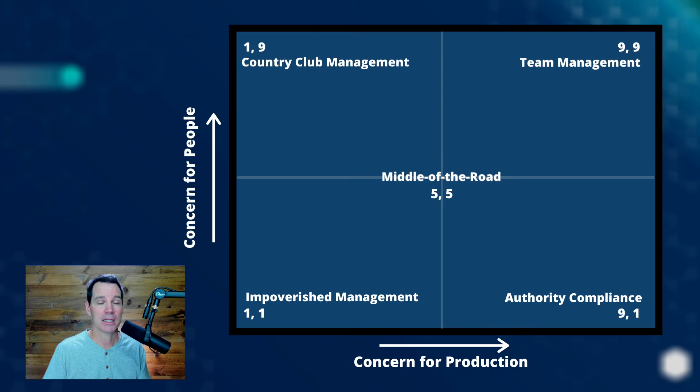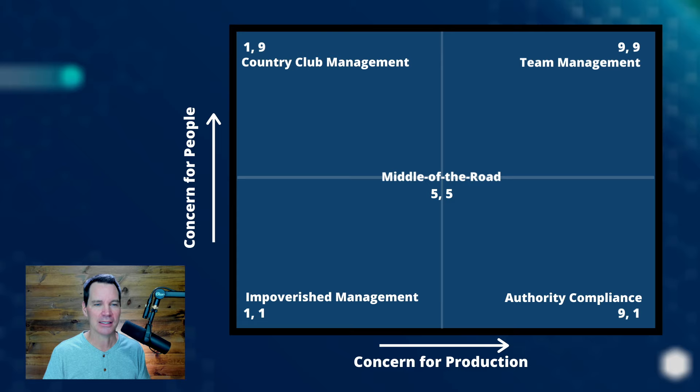At the bottom right, we have what's called authority compliance. When you have a high score — a nine — it's also very low on concern for people. So here you basically see people as a resource to get the job done. They're people, but really just a resource, and there's not a lot of attention or concern for people.